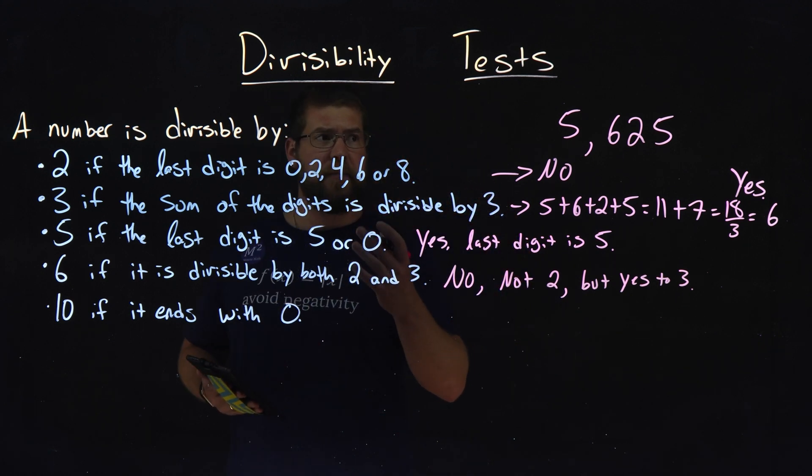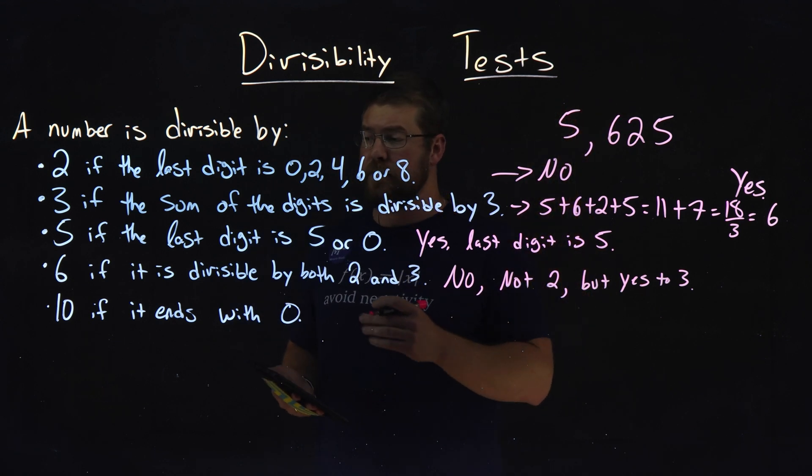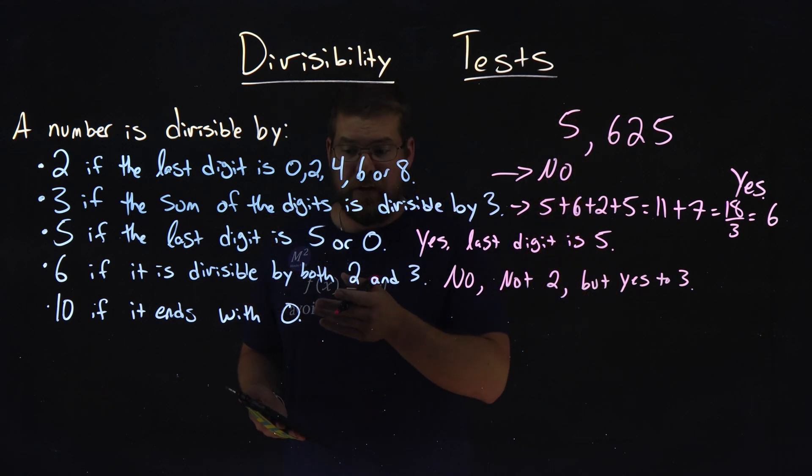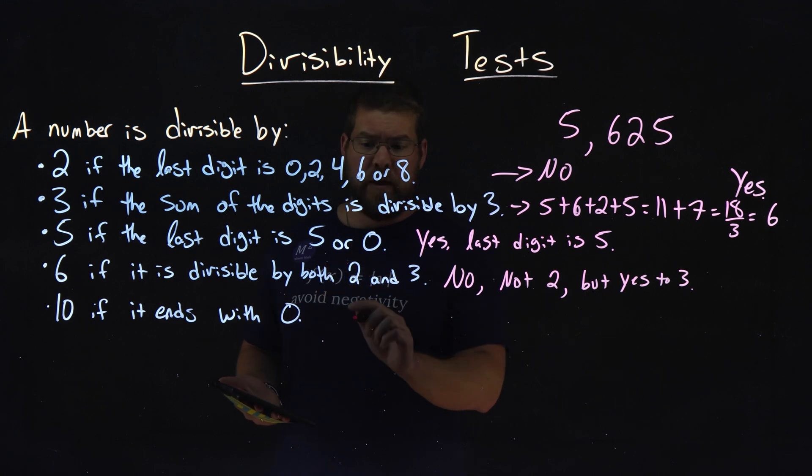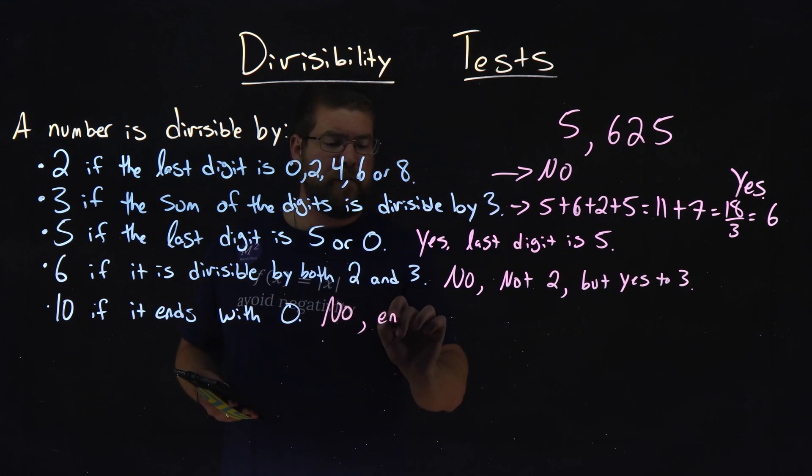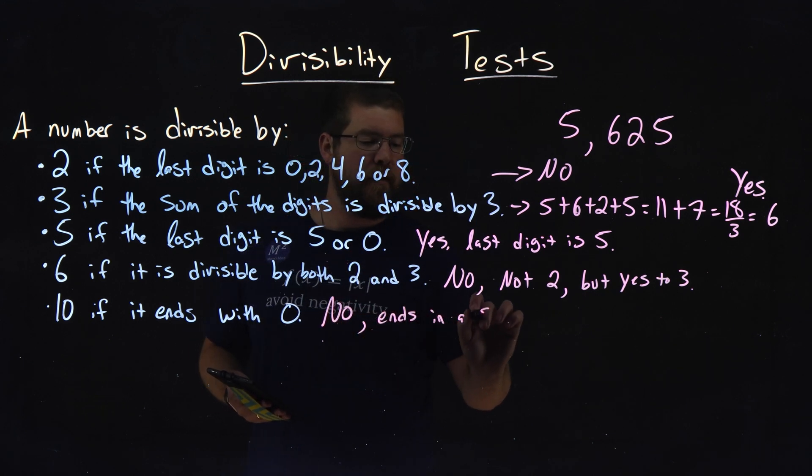And lastly, what about 10? Is 5,625 divisible by 10? Well, does it end in 0? No, it does not. So that's a no. Ends in a 5.